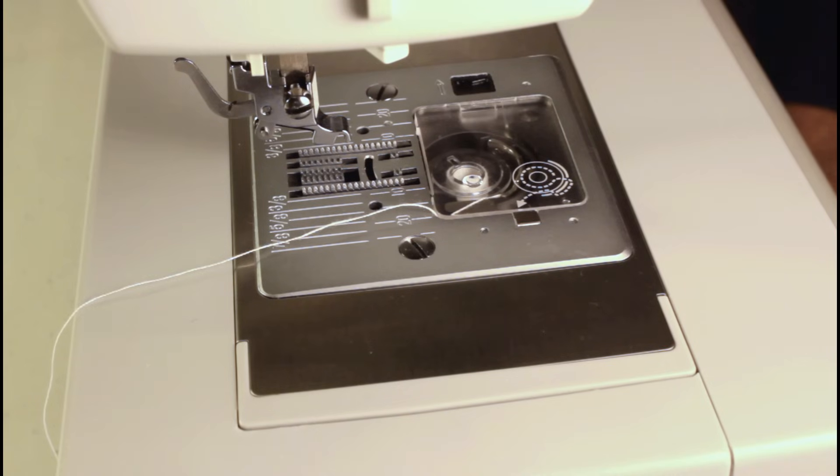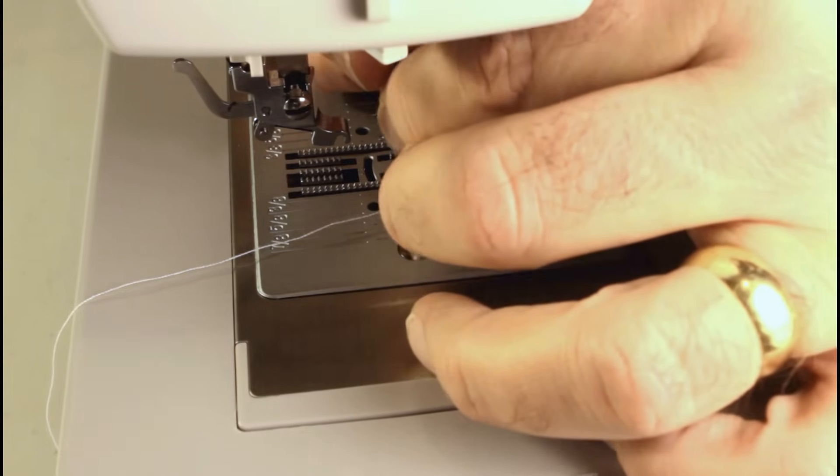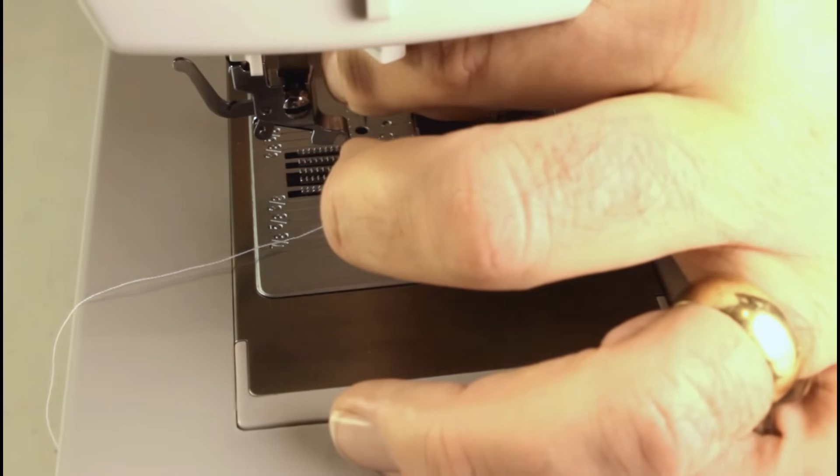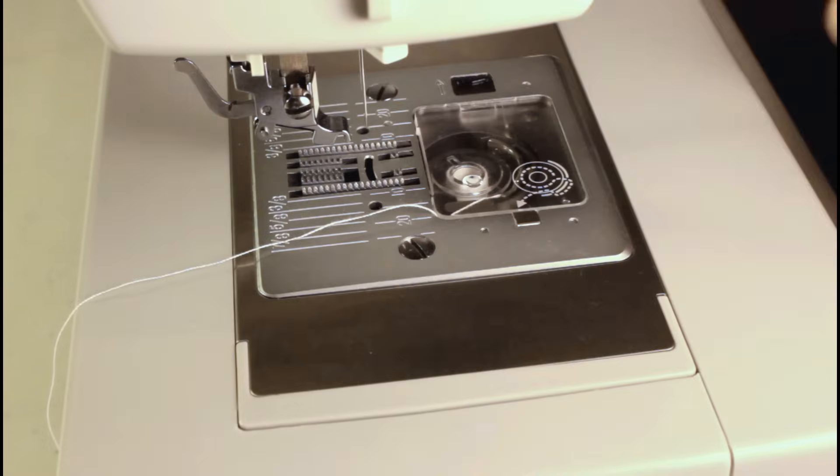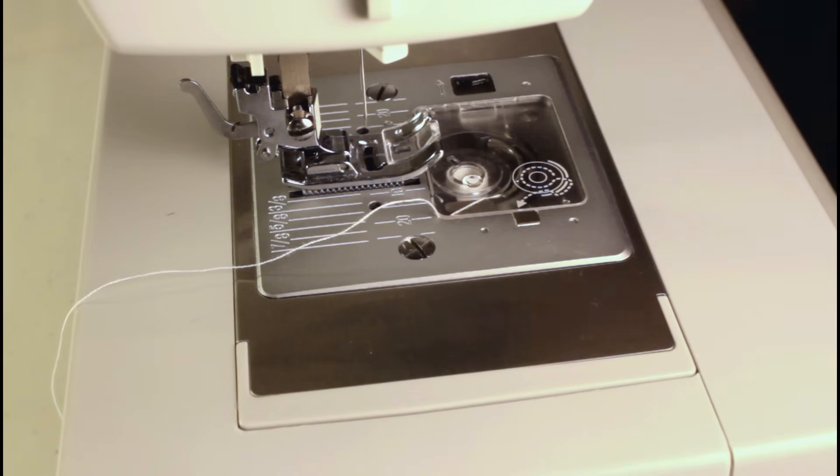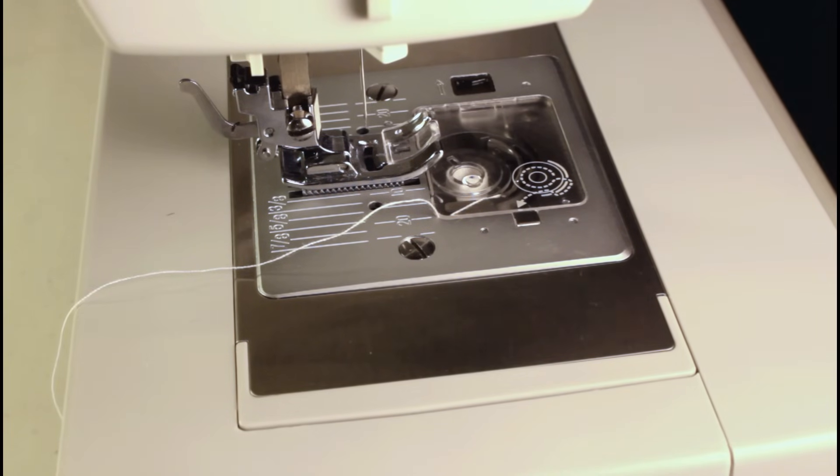What you're going to want to see is that your top thread has got a nice stitch in it. I'll tell you what, let me go ahead and get some thread. Get a needle back in. Get a spool of thread. And it's good when you're doing your test to use different color threads from the top and the bottom. That will allow you to see clearly what's going on.